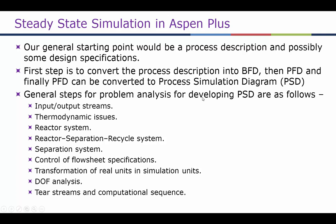We look at the thermodynamic issues — in other words, decide which property method to use in Aspen. We look at what reactor systems we need, whether it's an adiabatic or isothermal reactor, and whether to use simple models like RGibbs or complex kinetic models like RPlug and RCSTR.